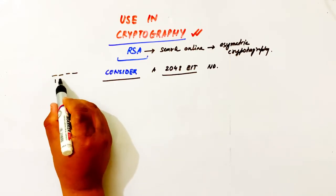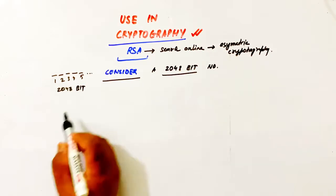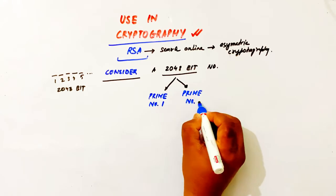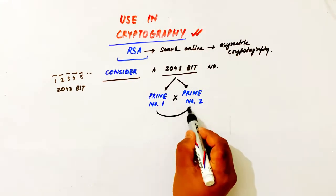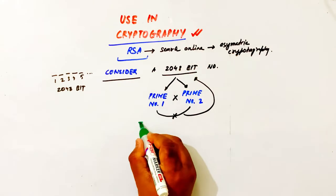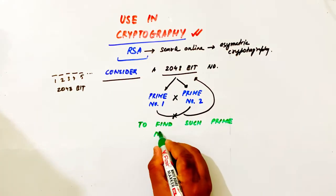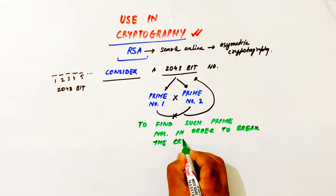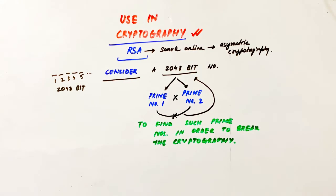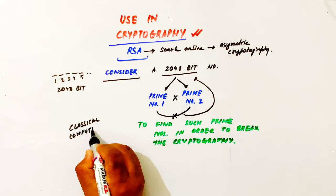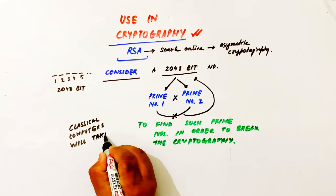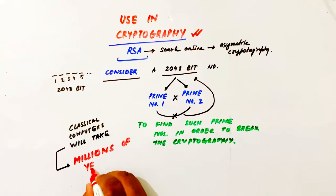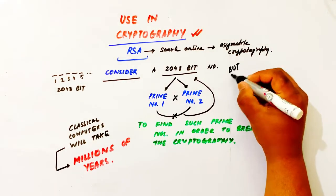So we use the RSA algorithm — asymmetric cryptography with private and public keys. In RSA, we use a 2048-bit number, which is the product of 2 prime numbers. If we try to find those prime numbers using a classical computer, the classical computer will run for millions of years to find all the possible prime number combinations. But with a quantum computer, it is possible in minutes. Yes, you heard it correct — minutes, using a quantum computer.